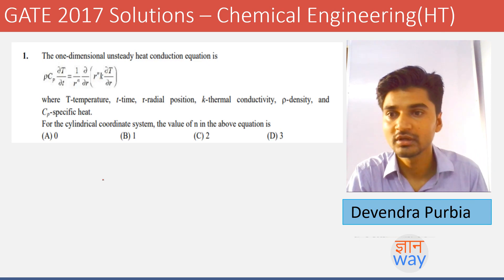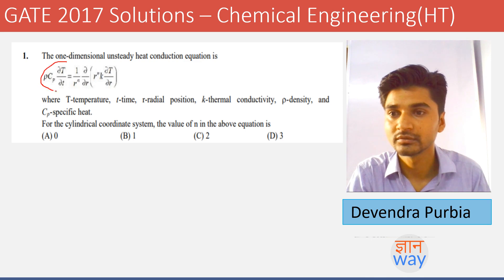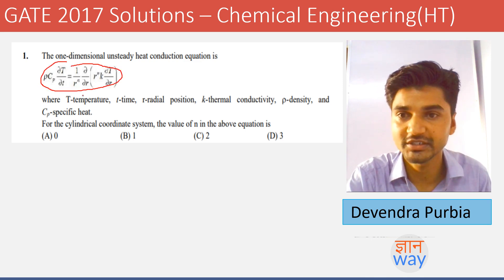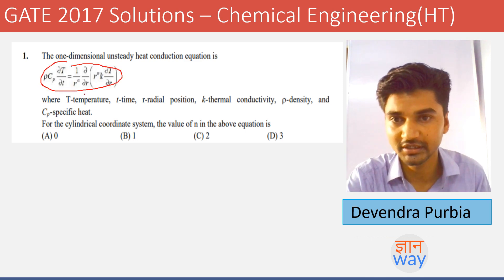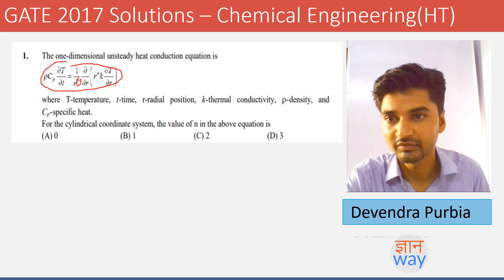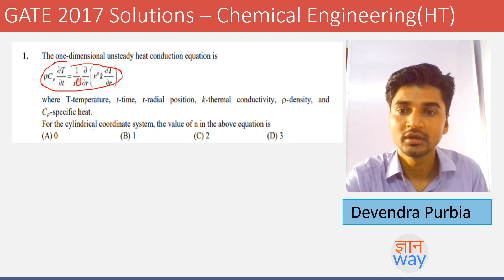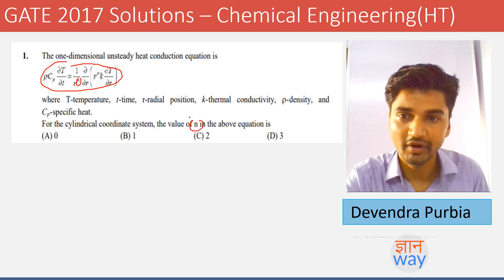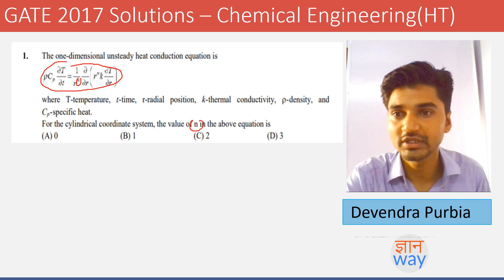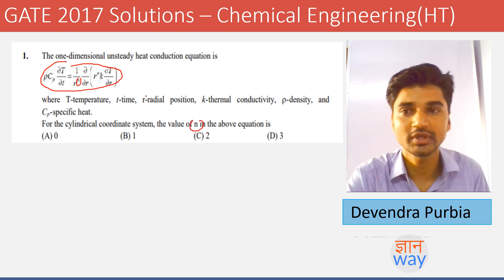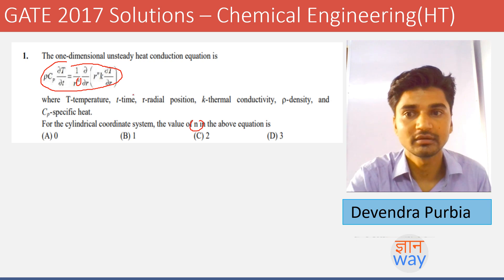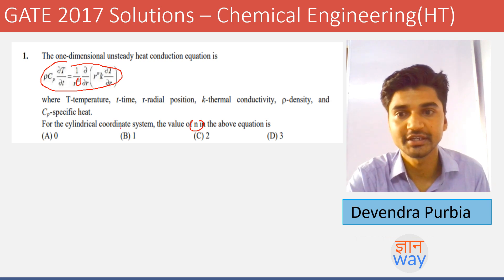The first question given is a one-dimensional unsteady-state heat conduction equation with n for cylindrical coordinates. We need to find the value of n so that it corresponds to the one-dimensional unsteady-state heat conduction equation.